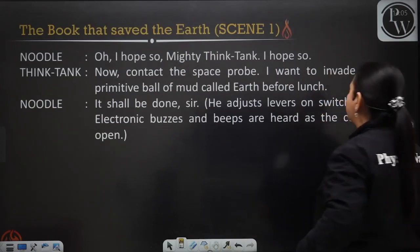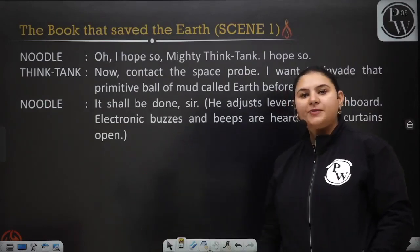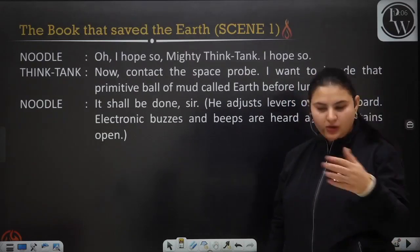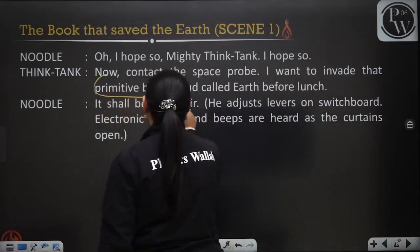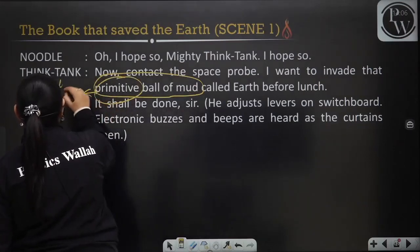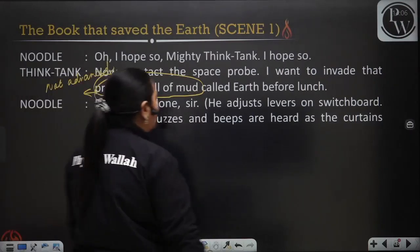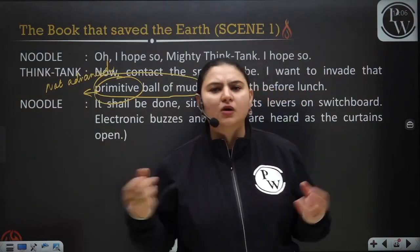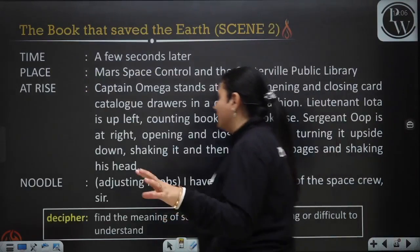Think Tank commands: now contact the space probe. I want to invade that primitive ball of mud called Earth before lunch. Noodle makes adjustments on the switchboard trying to get contact with the space probe. The scene changes — a few seconds later, the setting shows both Mars Space Control and the central wheel public library on Earth.